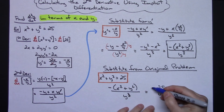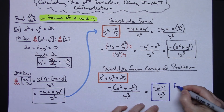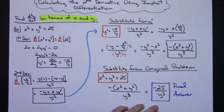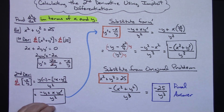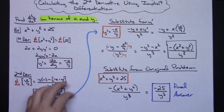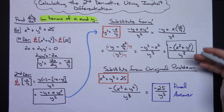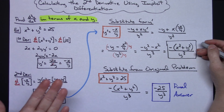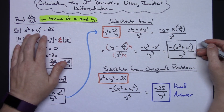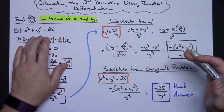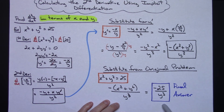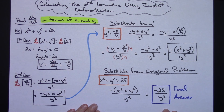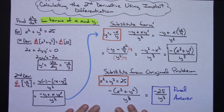That is the final answer. A lot of work, a lot of substitutions — but as long as you stay organized and know what you're doing and when, it's not too bad. You calculate your first derivative, you calculate your second derivative, then stop and take a look at it. If it's got a y' in there and you need the derivative in terms of x and y, substitute from whatever you calculated the first derivative to be. And if you can make a substitution from the original equation with a little simple algebra, you're definitely going to do that — which is what we did here to get a really nice clean second derivative.